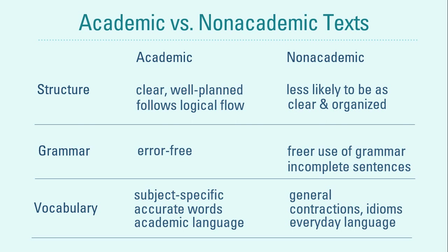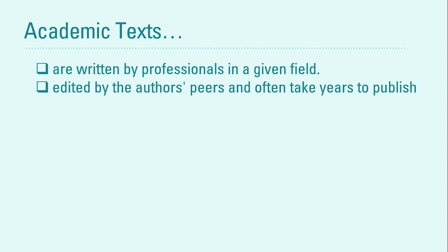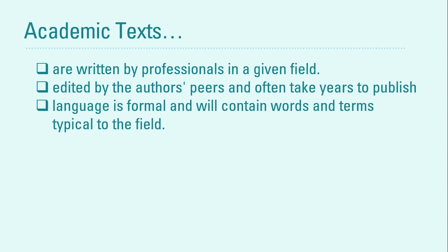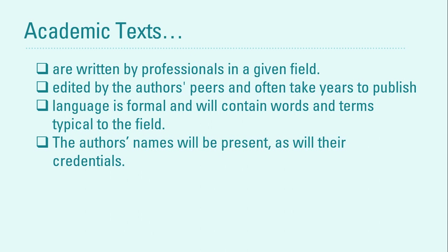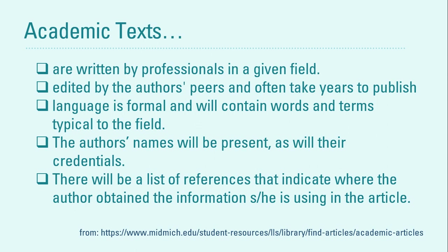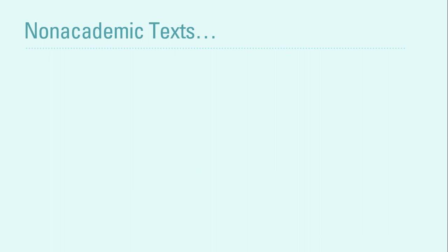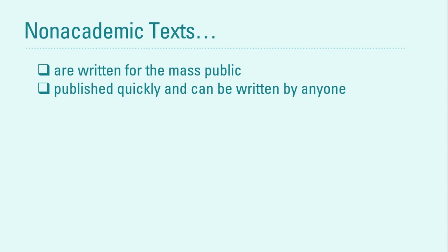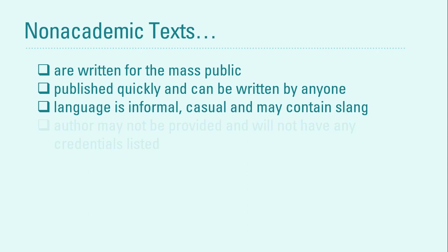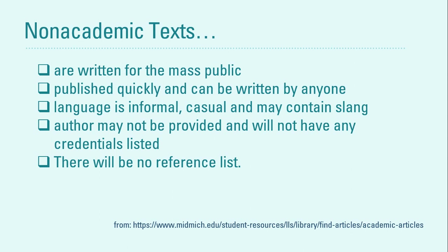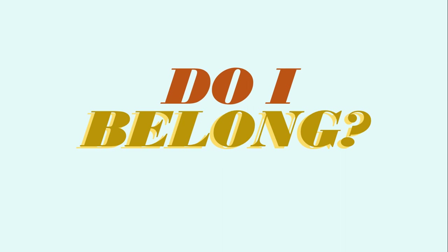Based on our analysis, we can define academic texts as written by professionals in a given field, edited by peers, and often taking years to publish. They use formal language with field-specific terms, include the author's name and credentials, and have a reference list indicating where information was obtained. Non-academic texts are written for the mass public, published quickly, and can be written by anyone. They use informal, casual language, may contain slang, and authors' credentials and reference lists are often absent.